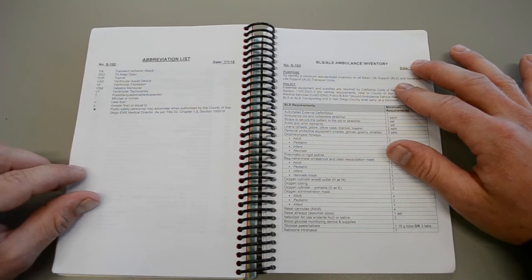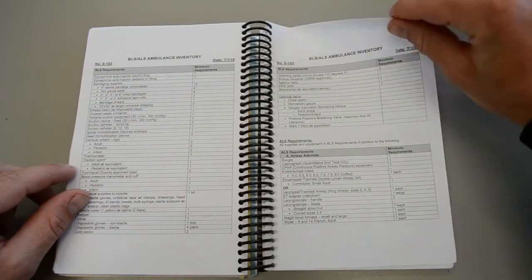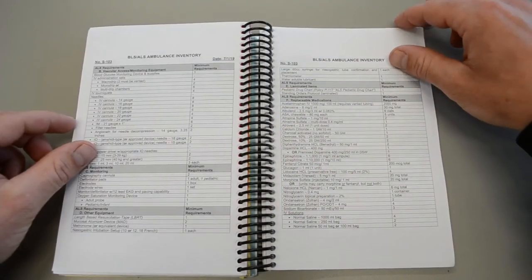BLS and ALS ambulance inventory. Annual inspections ensure that each ambulance is up to standards. So it starts off with BLS and then it introduces ALS components.